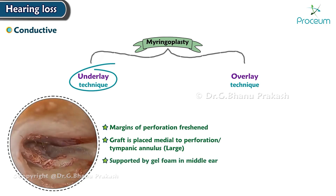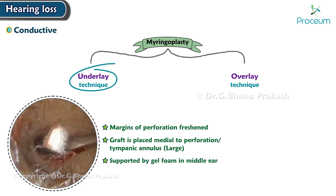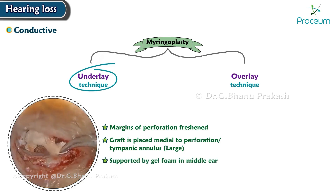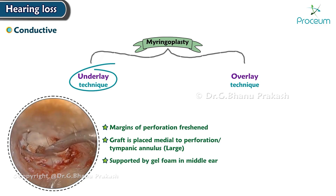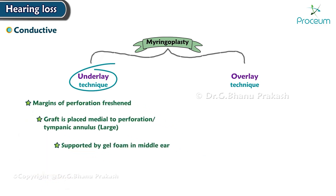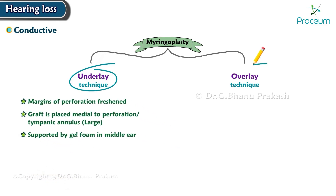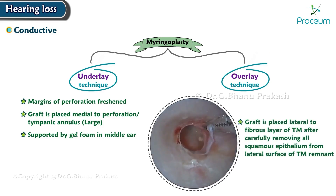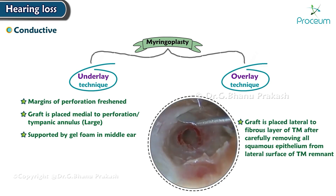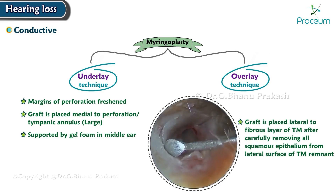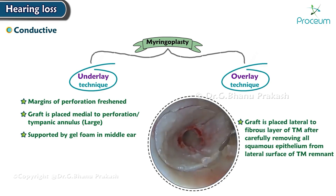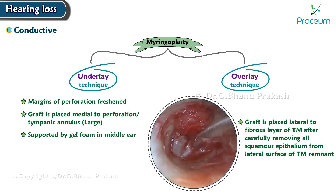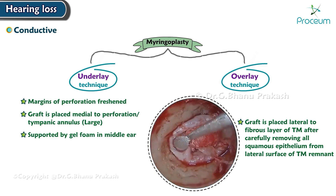In the underlay technique, the graft is supported by gel foam in the middle ear. In the overlay technique, the graft is placed lateral to the fibrous layer of the tympanic membrane after carefully removing all squamous epithelium from the lateral surface of the tympanic membrane remnant.